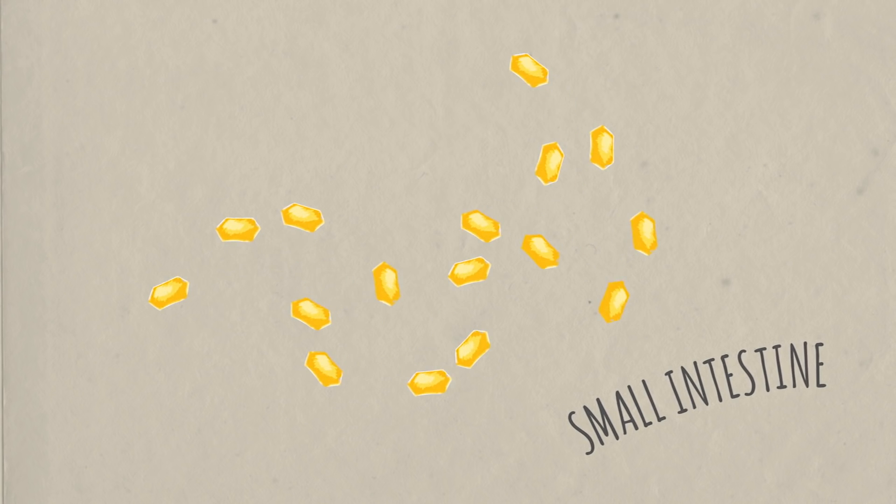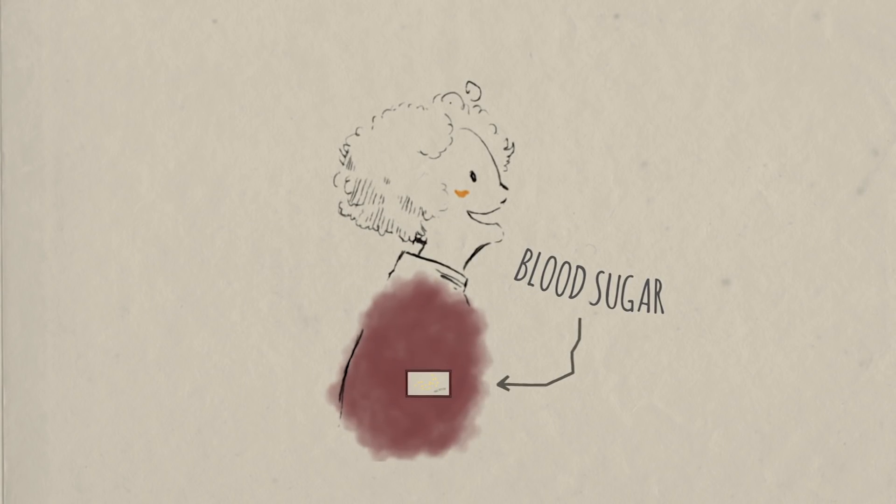During digestion, your body breaks down those complex carbohydrates into their monosaccharide building blocks, which your cells can use for energy. So when you eat any carbohydrate-rich food, the sugar level in your blood, normally about a teaspoon, goes up.